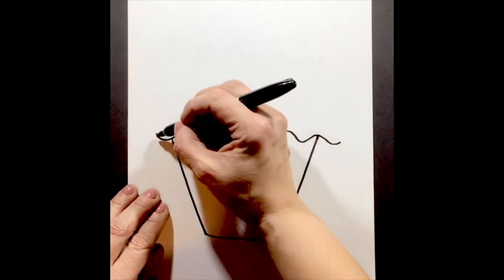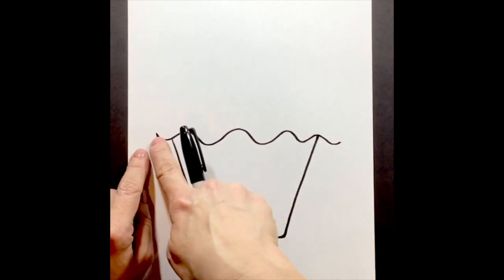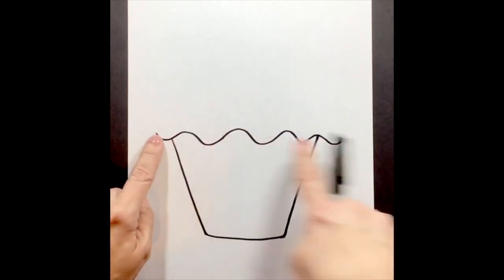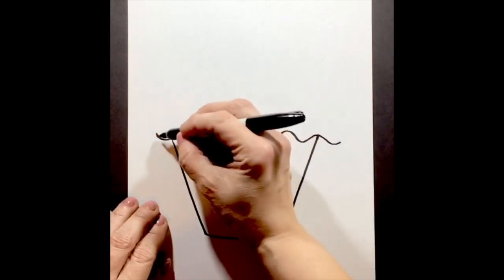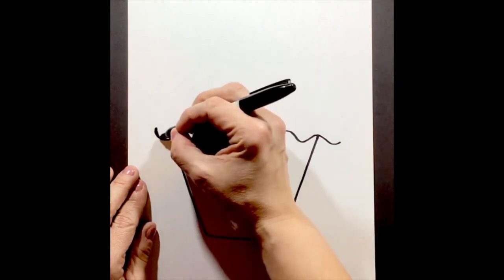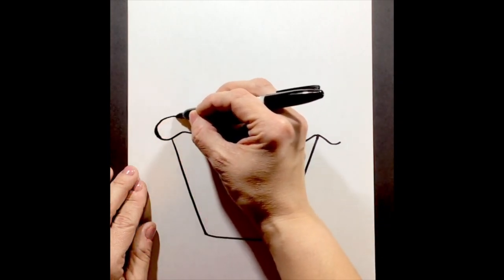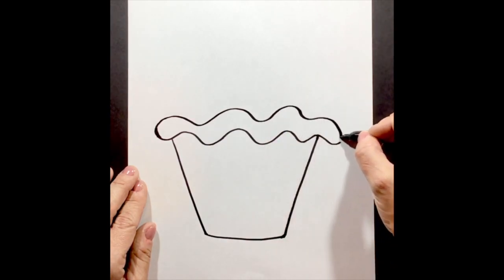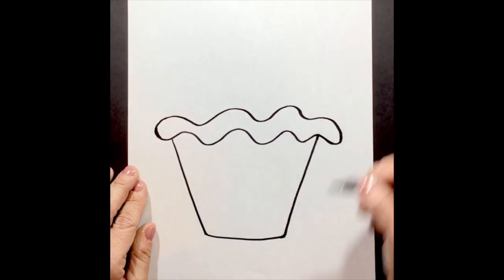Our next step, our step three, we're going to create another wavy line on top that's going to connect from this end to this end. So we're going to start here, and we're going to go up and extend this curve, and it's going to go down and wiggle its way, curvy all the way around to the other side.